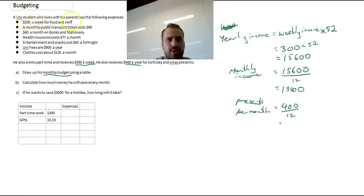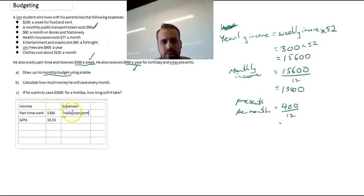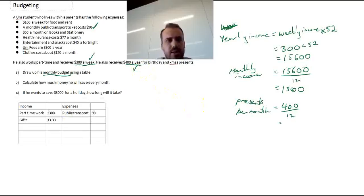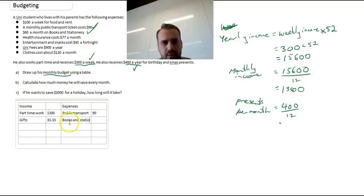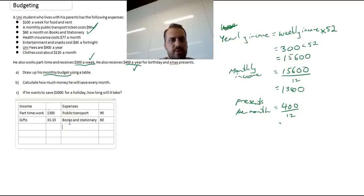Now let's start looking at their expenses. Now be careful. Make sure you tick everything off as you go. A monthly public transport ticket costs $90. That one's an easy one because it's already monthly. So I can put it straight in. Public transport, $90. Easy. There's another one here. Books and stationery is $60. That one's easy. Health insurance, that's going to be $77 a month. The last one that we can do straight away is the clothes. Clothes are going to be about $120 a month.